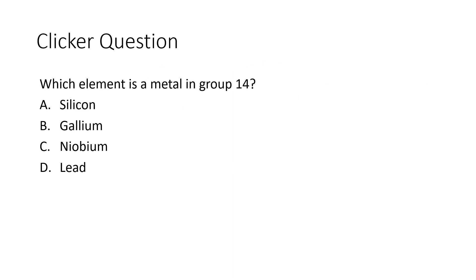Which element is a metal in group 14? We need to find group 14 — the group that has carbon at the top. Thinking about where the metals are, that will be the elements down at the very bottom of that particular column, and so that's lead. Lead is a metal in group 14.